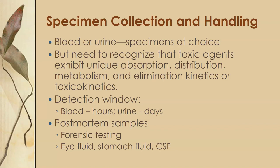Blood and urine are usually the specimens of choice for toxicology testing, but you do need to recognize that toxic agents can exhibit unique absorption, distribution, metabolism, and elimination kinetics — or toxicokinetics. For some toxins and xenobiotics, blood might be more helpful; for others, urine might be more helpful. The detection window for blood is usually within hours of exposure, and for urine within days of exposure. You can also collect postmortem samples if the patient has died for forensic testing.